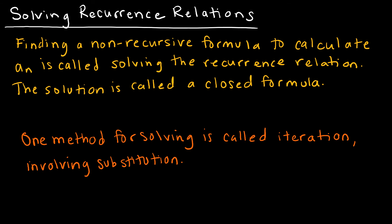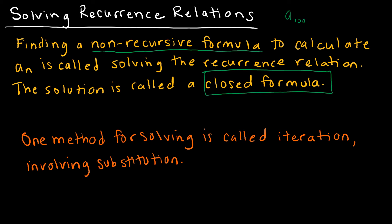Recurrence relations certainly have their place, but they're not ideal if you want to find, say, the 100th term — that would require computing all the preceding terms, which is a lot of work. So what we'd like is a non-recursive formula — an explicit or closed formula. We've worked on this with arithmetic and geometric sequences, but when a sequence is neither, we need another method. One such method is called iteration, which involves substitution.